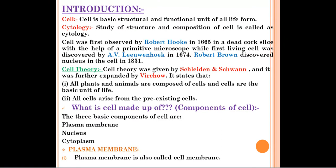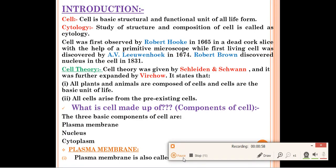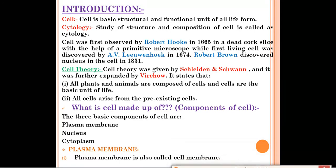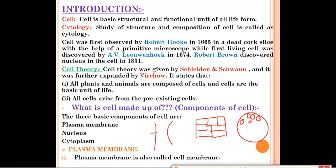The name of the chapter is 'Cell: The Fundamental Unit of Life.' The definition of cell is: it is the basic structural and functional unit of life. For example, for making a building we need bricks. In chemistry we read about atoms — that everything is made up of atoms. Like that only, for making any living organism, whether plant or animal, we need the cell.